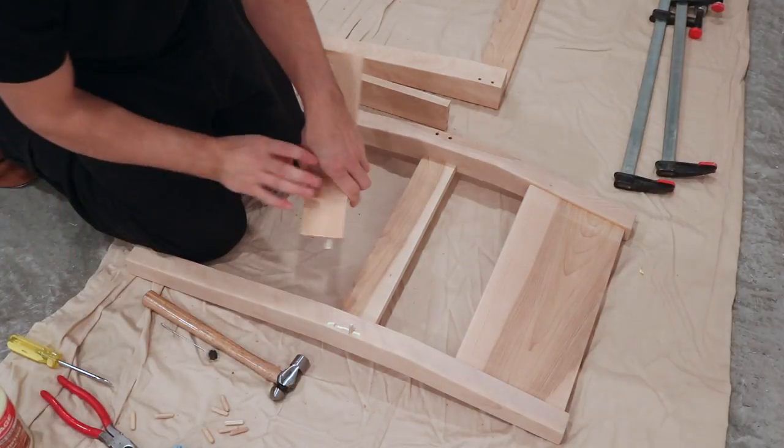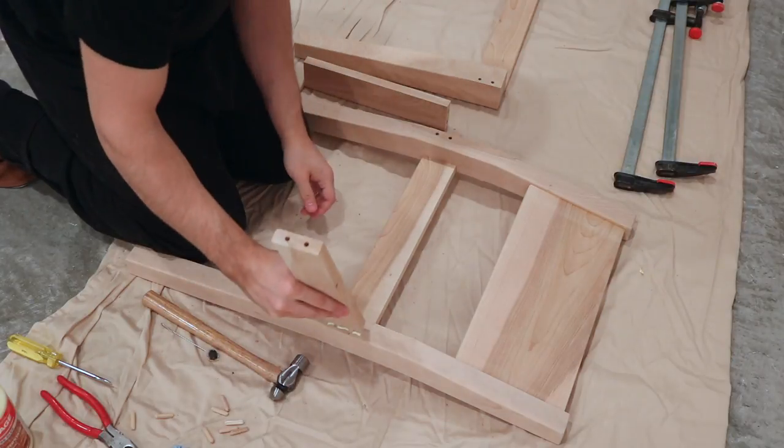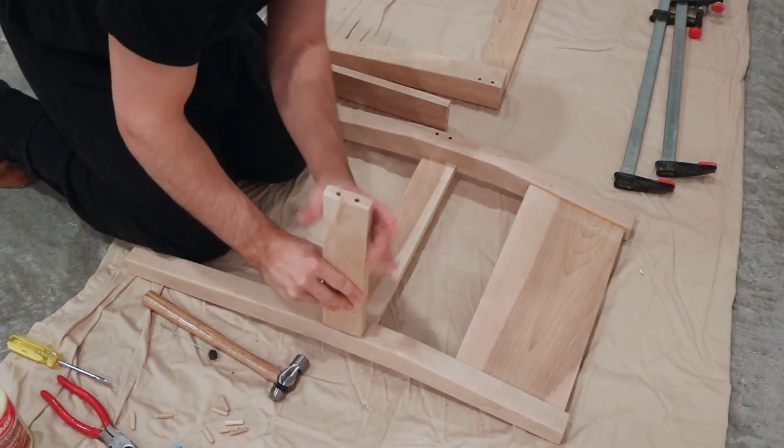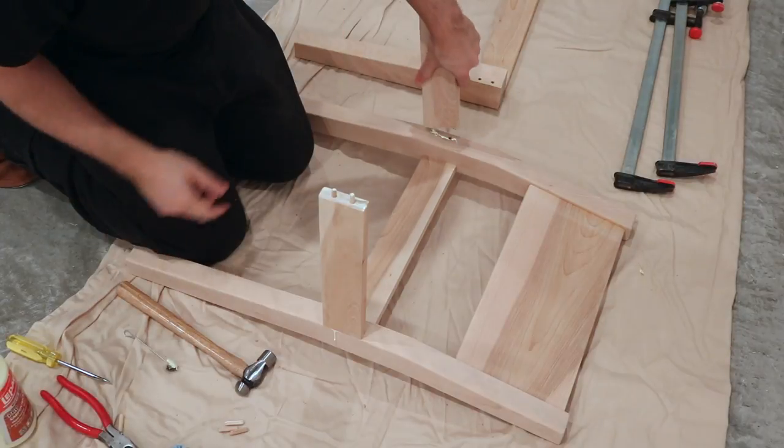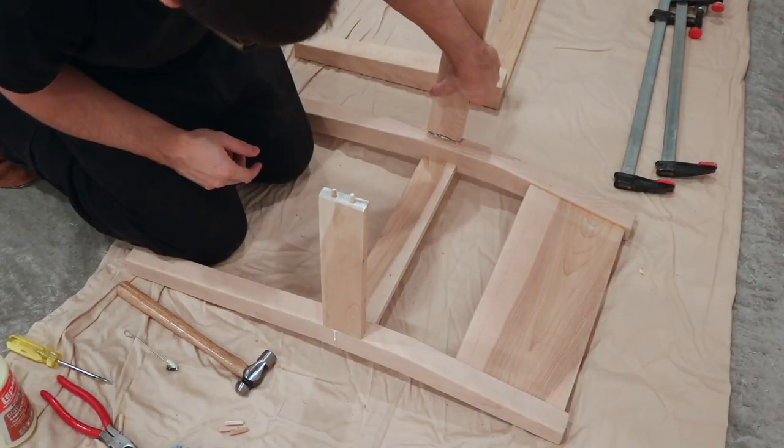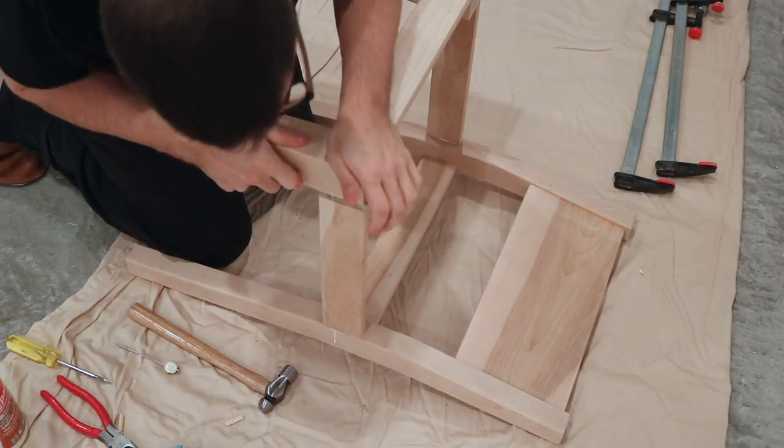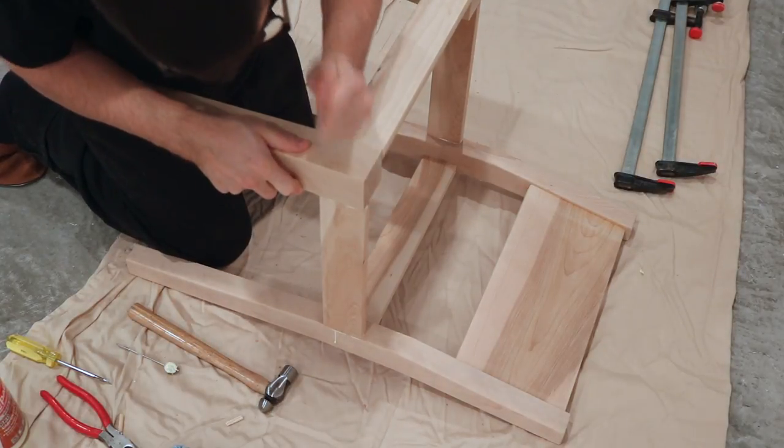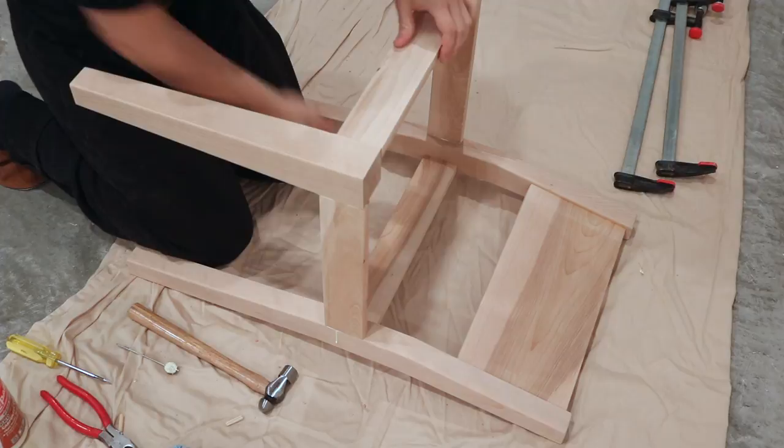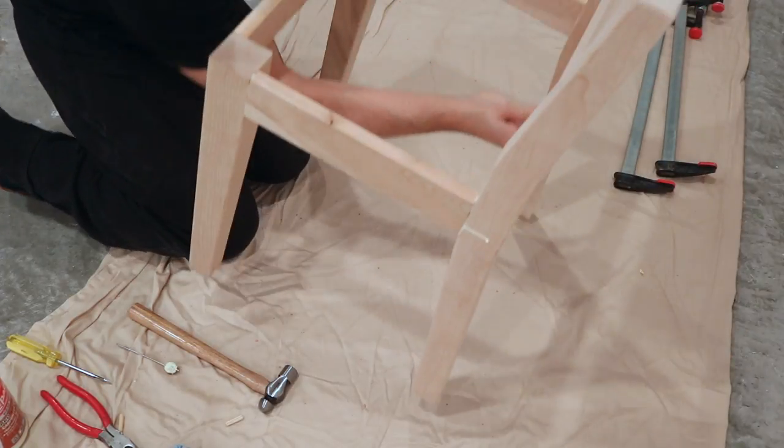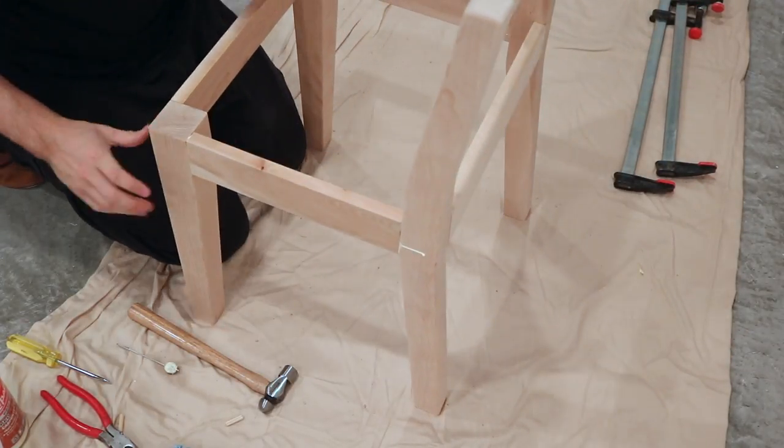Once the front and backs had dried, I took them out of the clamps and glued them together using the side rails. Make sure to wipe off any glue squeeze out with a damp rag. It will make the final sanding that much easier.